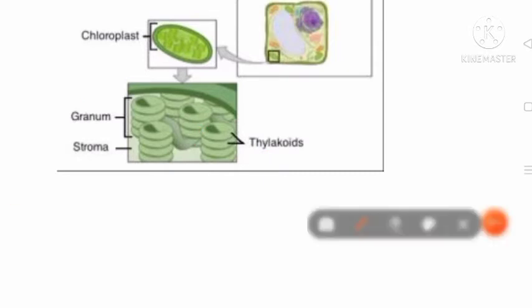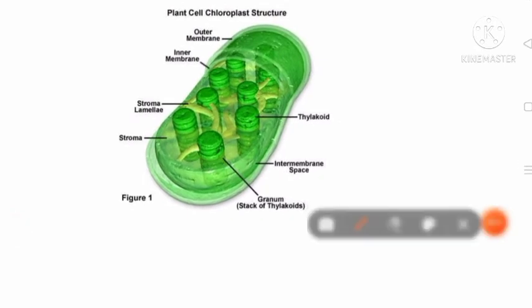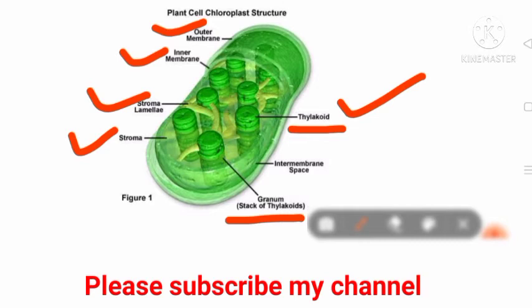The structure of a chloroplast is further explained. The chloroplast is a double-membranous structure with an outer membrane and inner membrane. The fluid present inside the chloroplast is called stroma. The coin-like stacks are called grana (stack of thylakoids), and each coin is called a thylakoid. One granum is connected to another by stroma lamella. Chlorophyll molecules are present on the thylakoid and are responsible for carrying out photosynthesis.